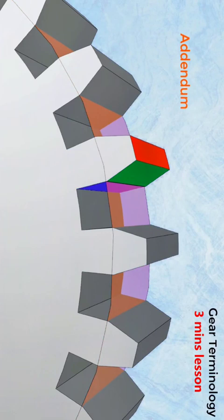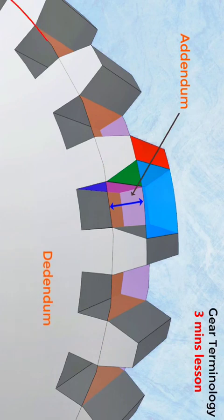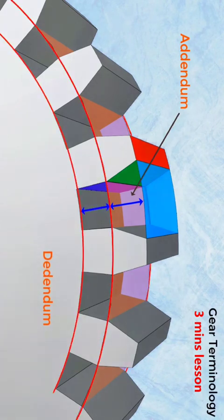Addendum. The distance between the pitch circle to the top of the tooth in the radial direction is called the addendum. Dedendum. The radial distance between the pitch circle and the bottom of the tooth is known as the dedendum of the gear.